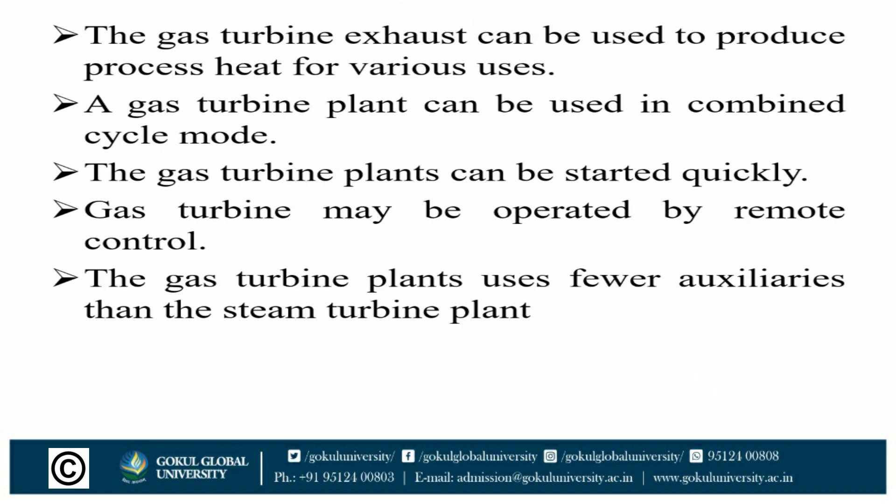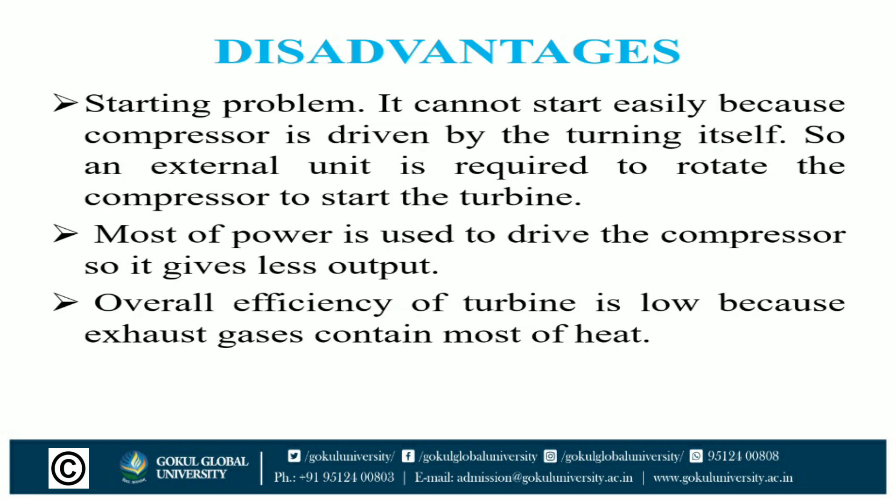Gas turbine exhaust can be used to produce process heat for various uses. The gas turbine plant can be used in conjunction with a bottom steam power plant in combined cycle mode, improving overall fuel-to-electricity efficiency. Gas turbine plants can be started quickly and put to full load power within a few minutes. Gas turbines may be operated by remote control. Lastly, the gas turbine plant uses fewer auxiliaries than a steam turbine plant.